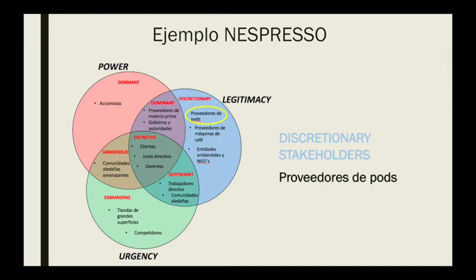Nespresso, towards this group, must continue demanding and promoting quality and sustainability. Neighboring communities are considered dependent stakeholders — people who, for any reason, live close to the points where Nespresso works. They demand the minimization of negative effects on the population caused by Nespresso's operations. The company can bring development and work to this population; nevertheless, the consequences can also be negative and damage such population.